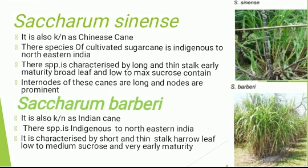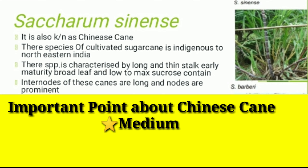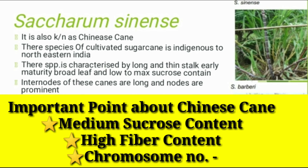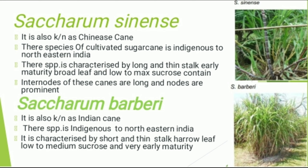Saccharum sinense: It is also known as Chinese cane. This species of sugarcane is indigenous to north-eastern India. It is characterized by a long thick stalk, early maturity, broad leaf, and low to medium sucrose content. Internodes of these canes are long and nodes are prominent.